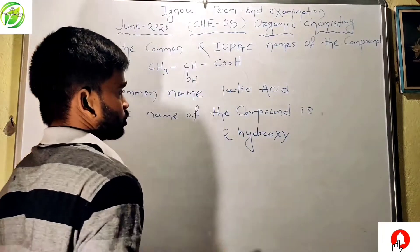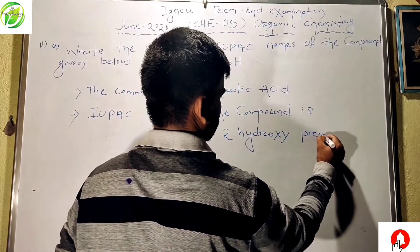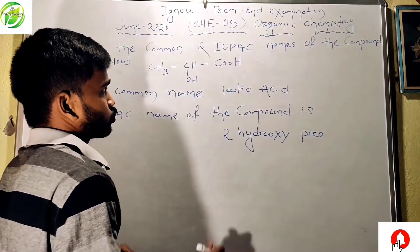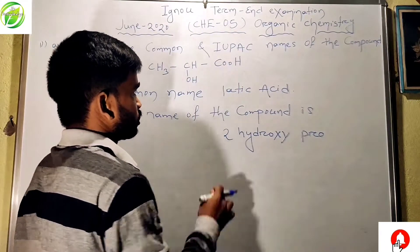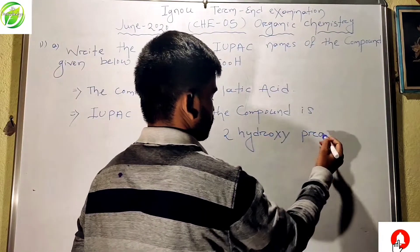Three carbon atoms are present, so write 'propane', and this is a carboxylic acid, so we use the suffix 'oic acid'. Thus the resultant name is 2-hydroxypropanoic acid.